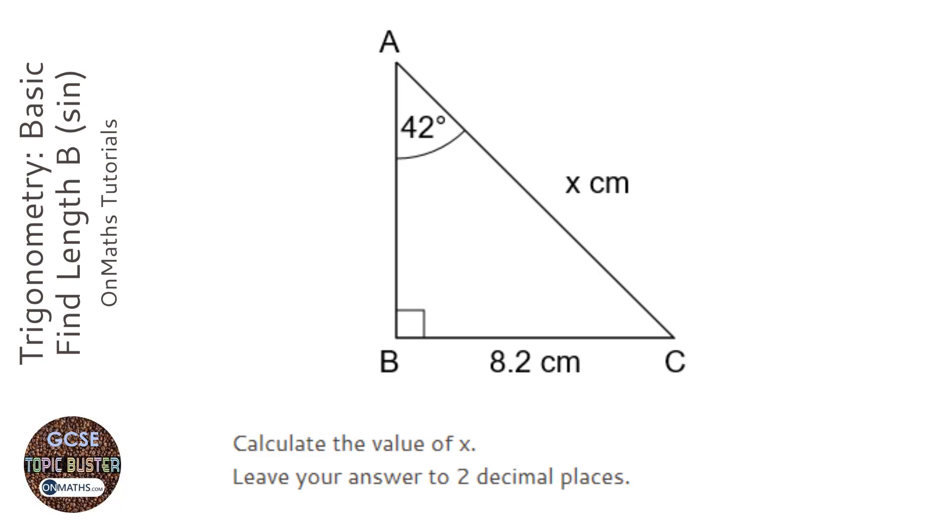A Pythagoras would be all three lengths, with one of them being unknown. As soon as there's an angle, you need to be thinking, is this trigonometry? And this one is.